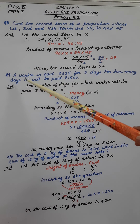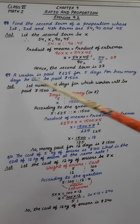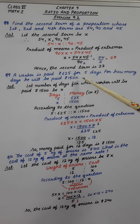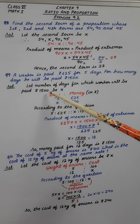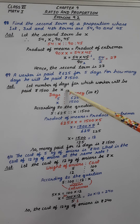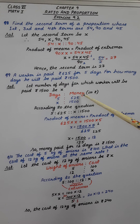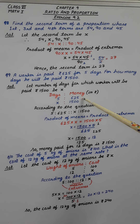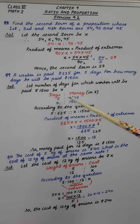Now ninth question. A worker is paid Rs. 625 for 5 days. For how many days will he be paid Rs. 1500? We assume the number of days for which the worker will be paid Rs. 1500 to be x.